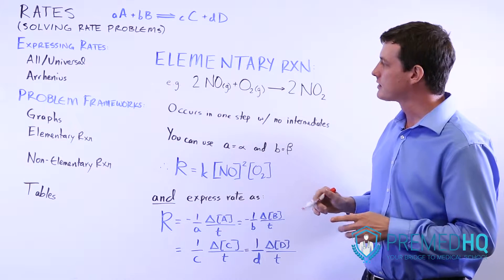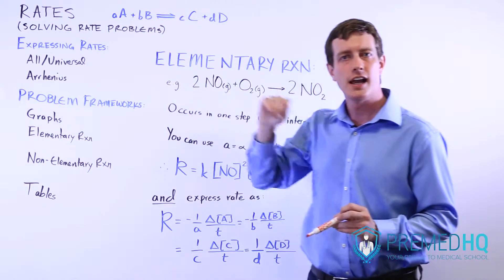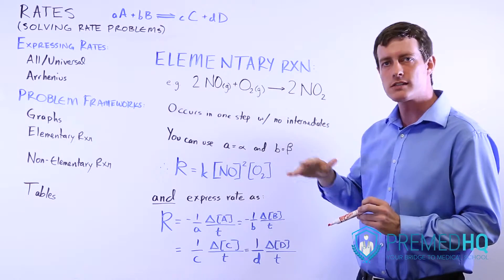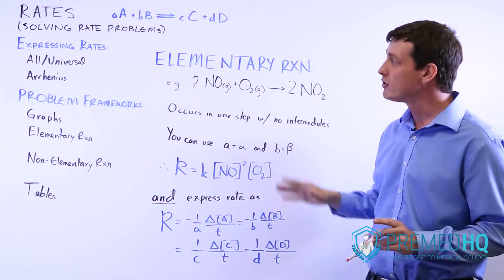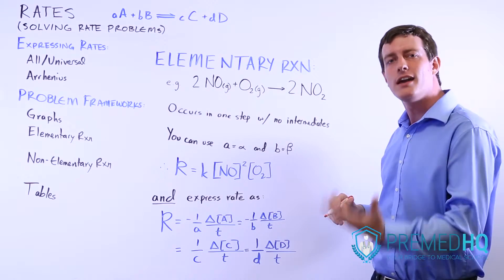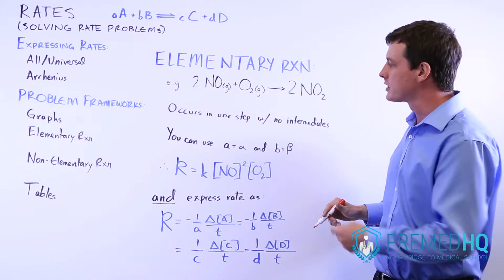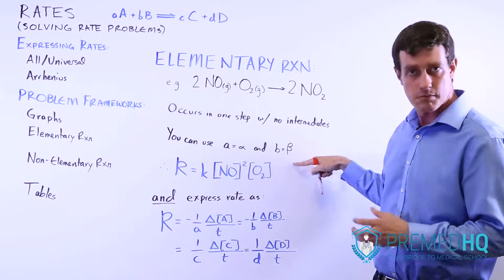Remember that with all rates, you can't use the stoichiometry as the exponent that you raise some number to in the rate expression. However, if it's elementary, if it occurs in one step, then you can use the stoichiometry as your exponent. You can use lowercase a as the alpha and lowercase b as the beta.